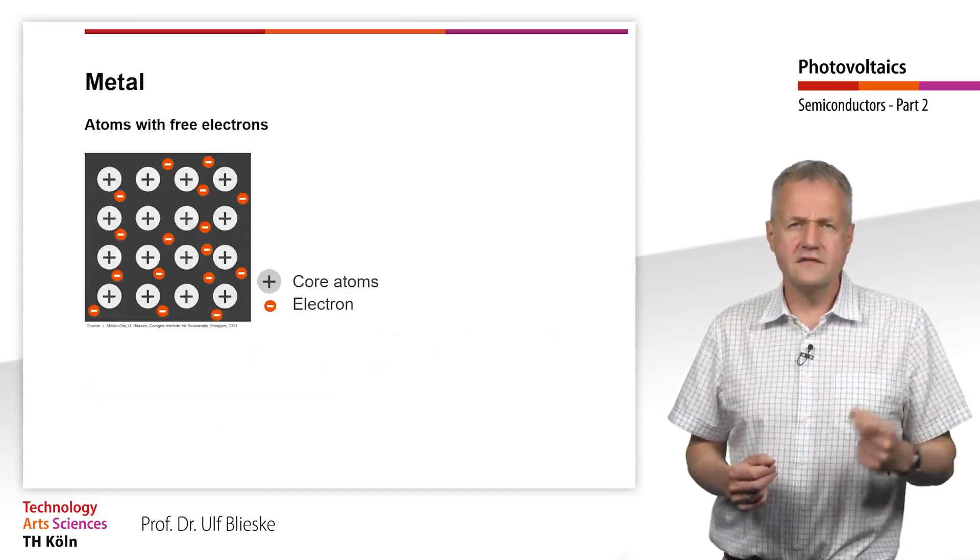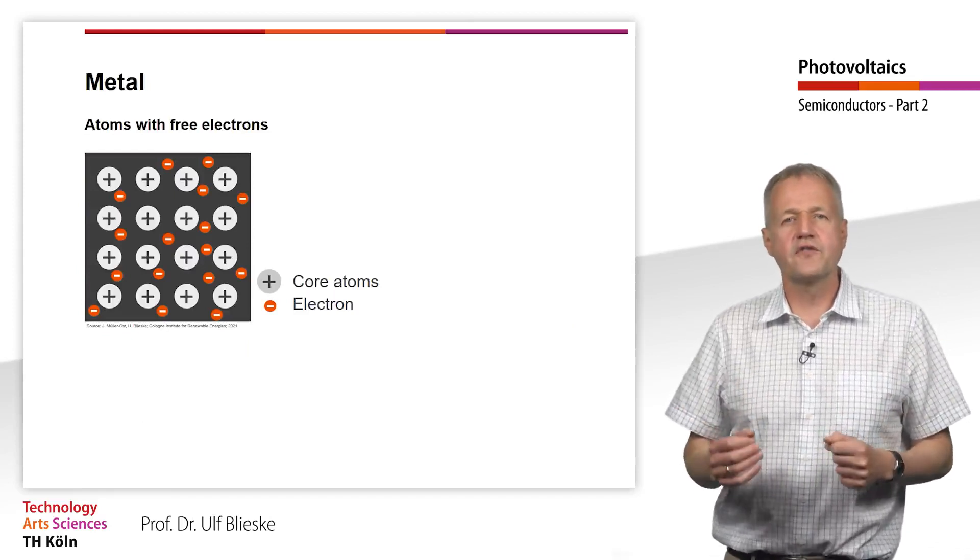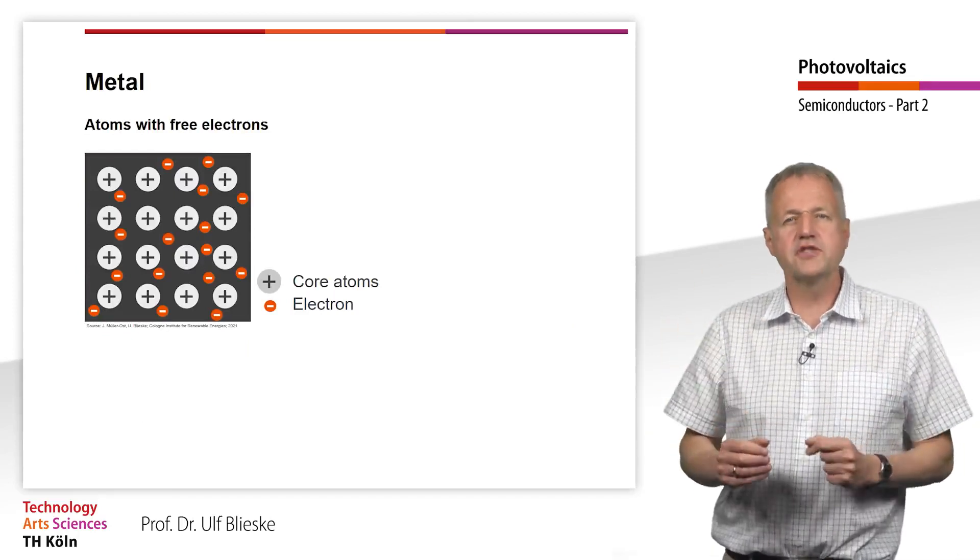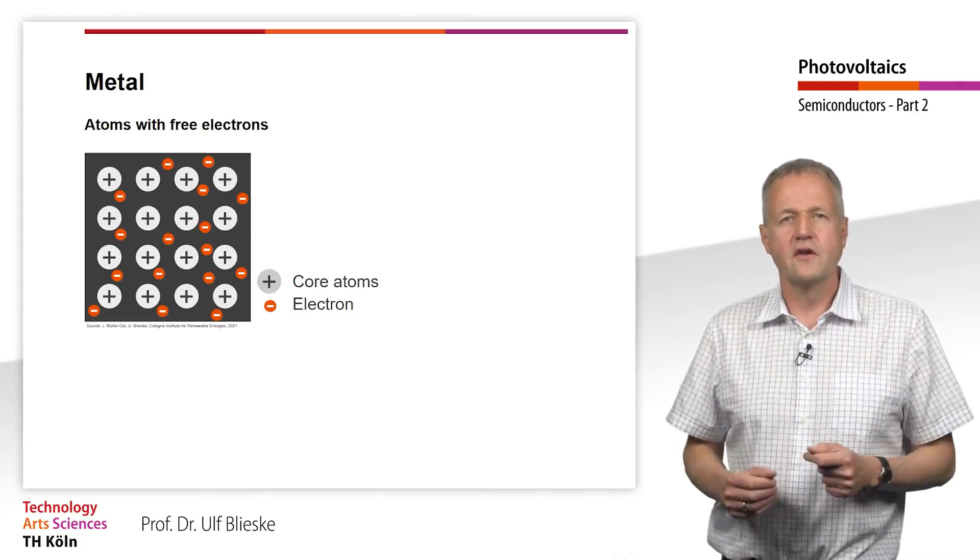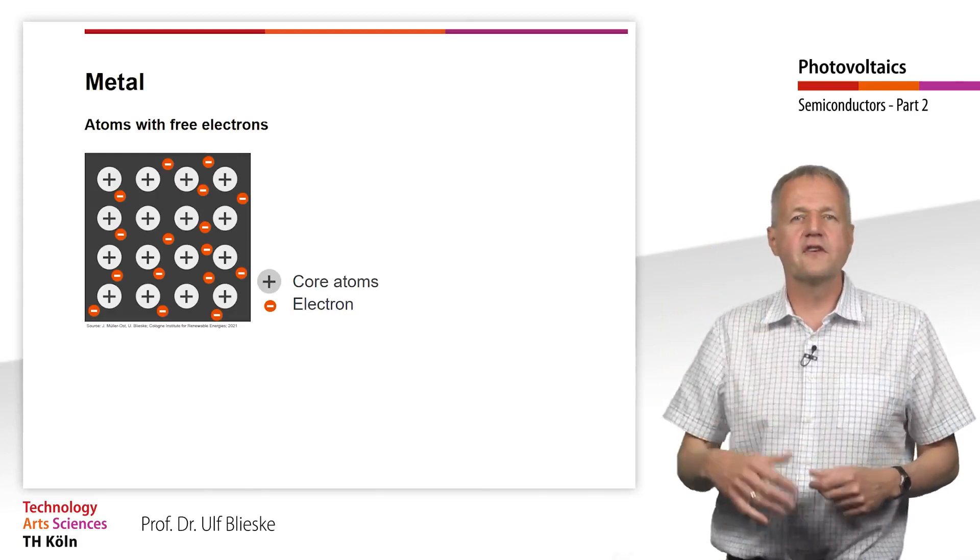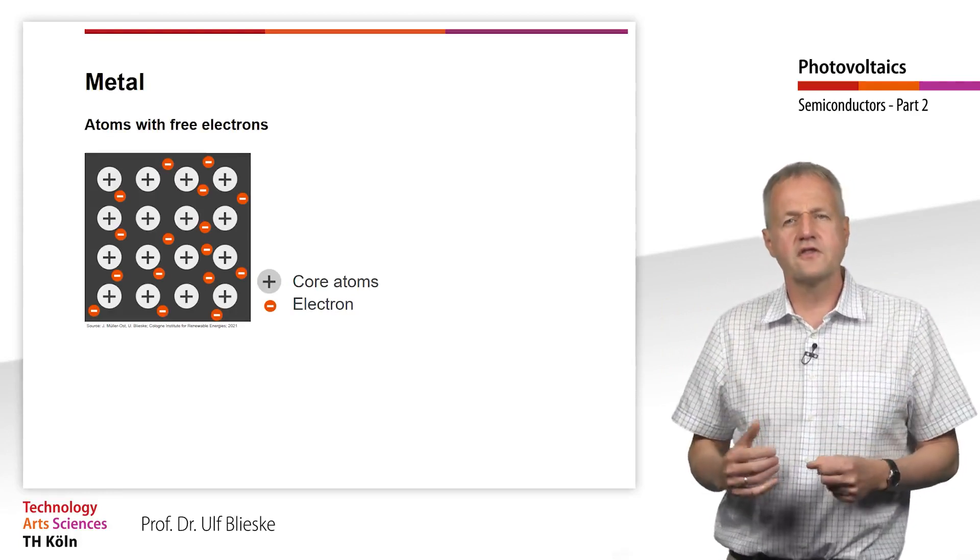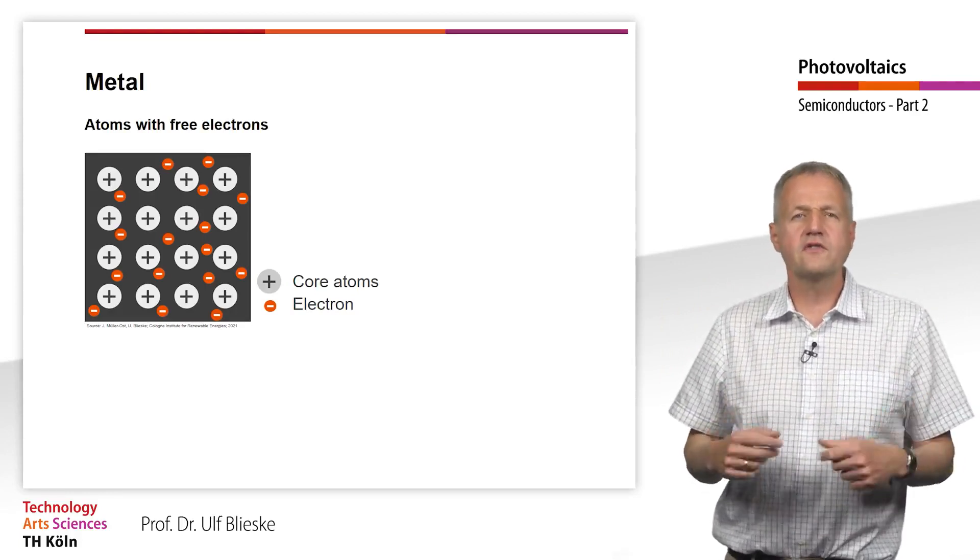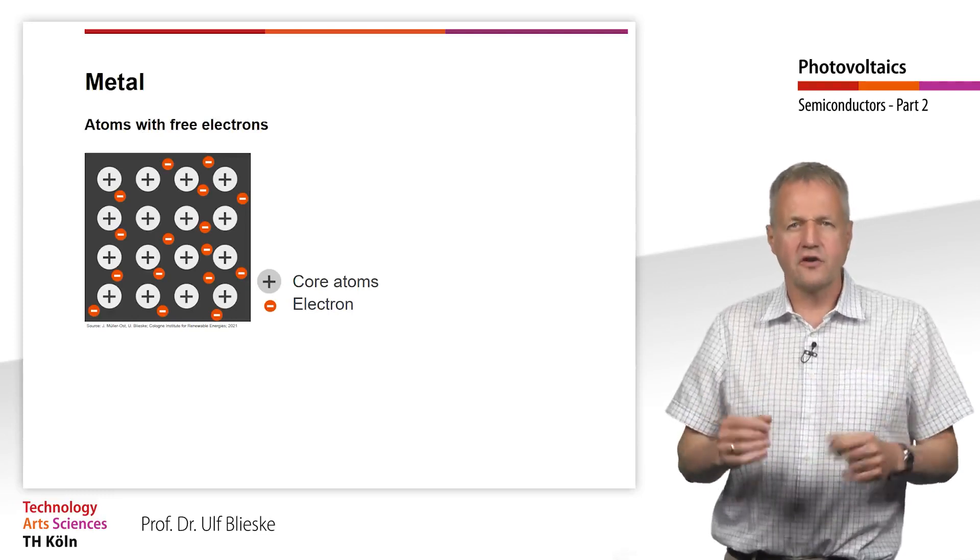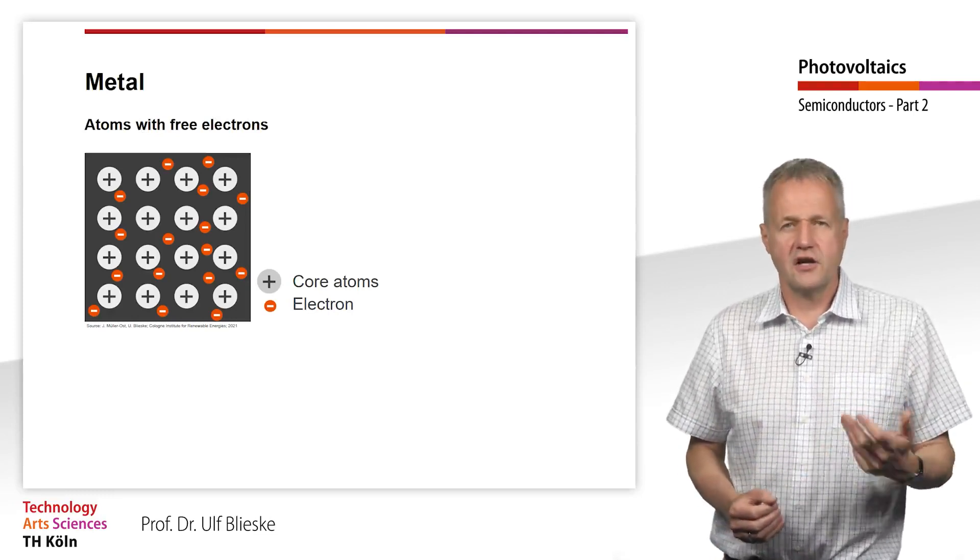As in the last teaching unit, we start with the two-dimensional spatial representation of a solid. We first consider a metal lattice. The core atoms consisting of protons, neutrons and inner electrons are simply positively charged.